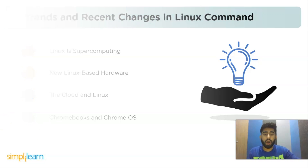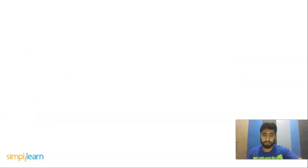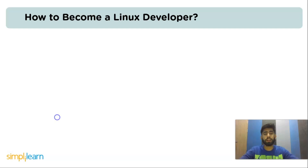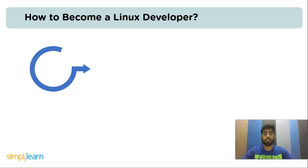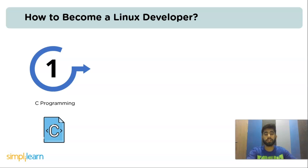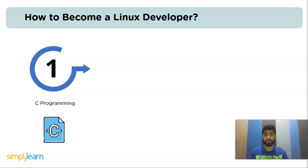Now let's see how to become a Linux developer. Let us take a look at the required skills needed to make a career as a Linux developer. The first one is to learn C programming. Most parts of Linux are written in C. If you want to contribute to low-level parts of the system, you should know assembly language as well. However, fundamentally it is important to learn the C language.